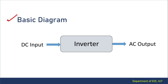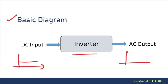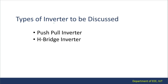This is a basic diagram of an inverter. In an inverter, we have a DC input and in the output we get an alternating output. Today we are going to talk about different types of inverters. If you have gone through the lab sheets, you must have seen that there are two types demonstrated: one is push-pull inverter and another is H-bridge inverter.